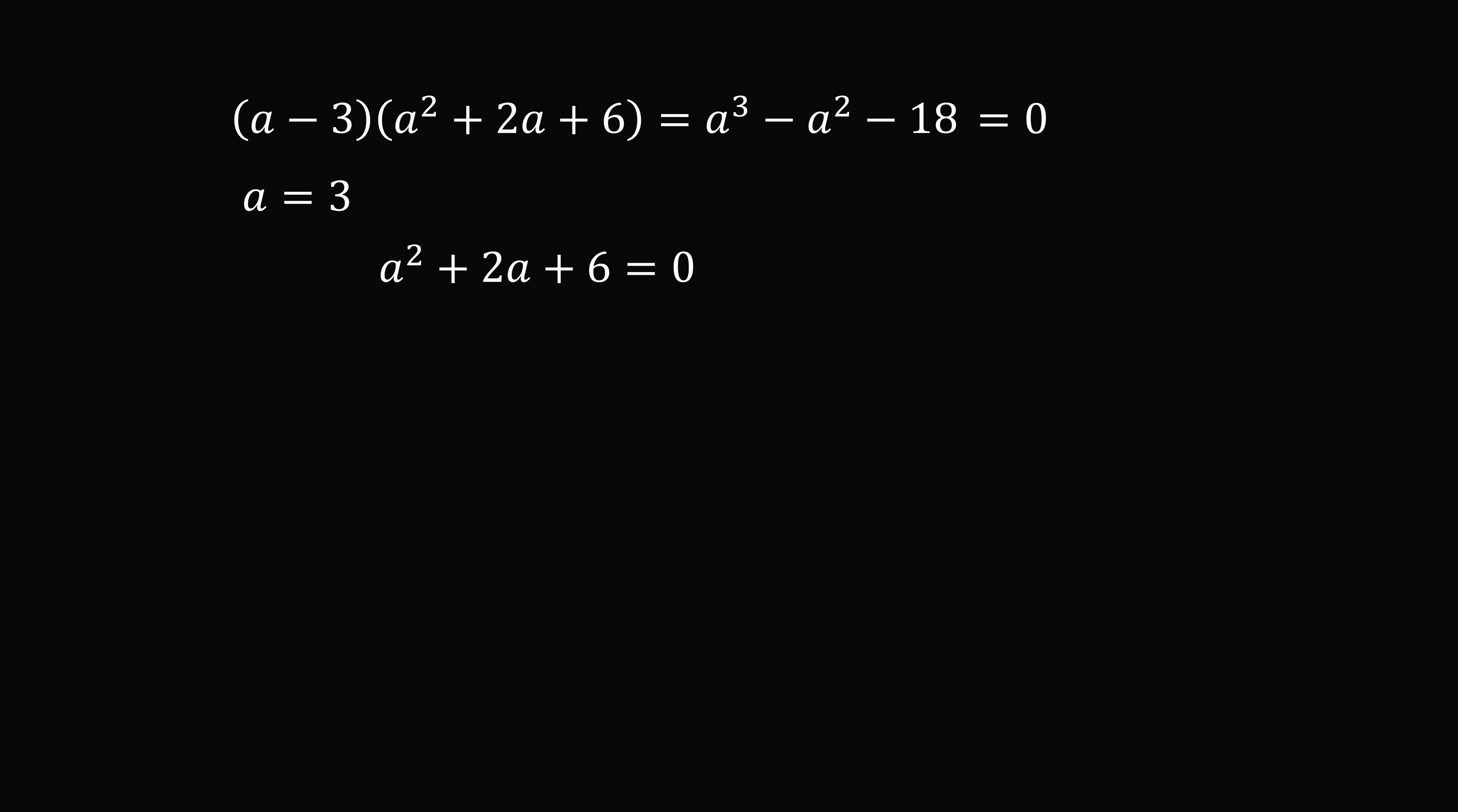We will use Brahmagupta's quadratic formula and we just substitute in. So a is equal to negative 2 plus or minus the square root of 2 squared minus 4 multiplied by 1 multiplied by 6. This is all over 2. So we simplify under the radical. This will be negative 20. Now negative 20 is equal to 4 multiplied by negative 5. So the square root of 4 is equal to 2. We pull that out. Now we divide through by 2 so that a is equal to negative 1 plus or minus i root 5.